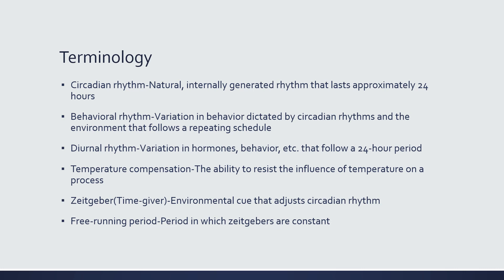A diurnal rhythm is a variation in hormones, behavior, etc., that follows a 24-hour period. The important part is that the diurnal rhythm is generated from both the circadian rhythm and the behavioral rhythm. A lot of people use 'diurnal rhythm' and 'circadian rhythm' interchangeably, but it's important to point out that yes, the circadian rhythm plays a role in the diurnal rhythm, but so does the behavioral rhythm. The diurnal rhythm is a combination of both.